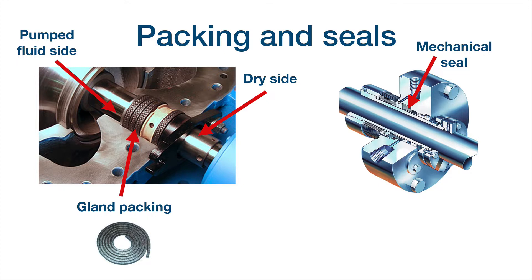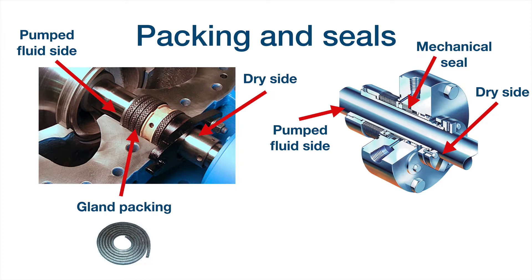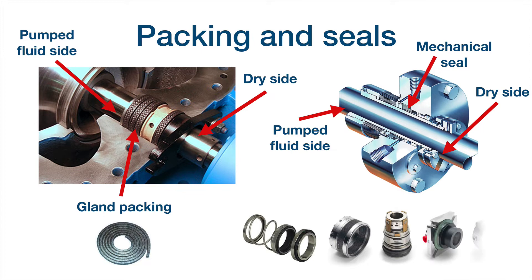A mechanical seal is always composed of a rotating part and a stationary part. The gap between the stationary face and the rotating face controls the leakage through the seal. There are several types of mechanical seals — single mechanical seals and cartridge mechanical seals. This is all for today. I will be waiting for you in the next lesson covering another interesting topic on centrifugal pumps. Goodbye.